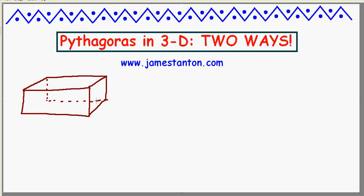And I could ask, in this box — suppose this is three inches, this is four inches, and the whole thing is 12 inches high, so don't trust the scale of my box here — what is the length of the longest stick that can fit in this box? Such a stick would probably go from corner to corner like this. So I'd like to know: what's the length d of that diagonal line through that box?